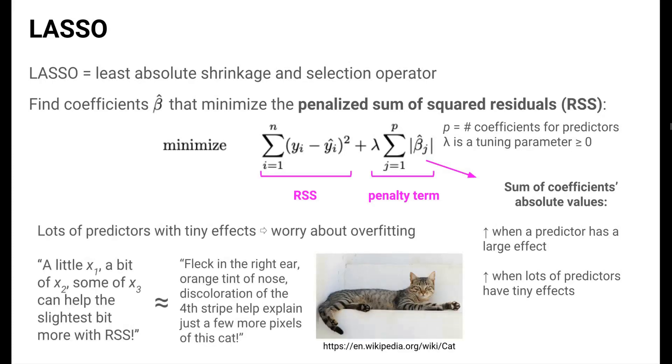When lots of predictors have very tiny effects, we should be worried that overfitting is happening. Why? Because our model is likely picking up on noise. Lots of small effects amounts to saying, we can decrease the sum of squared residuals just a bit more if we take a little of that predictor, a little of that one, and just a little of that one. This sounds a lot like overly reading into specific features of a single cat image when determining general characteristics of cat pictures. The black in the right ear, the orange tint on the nose, the discoloration of the fourth stripe all help me explain just a few more pixels of this cat picture.